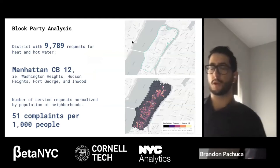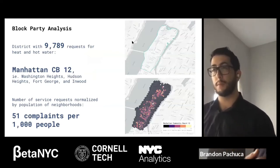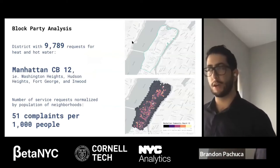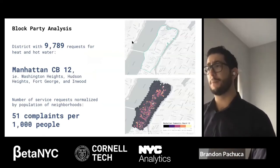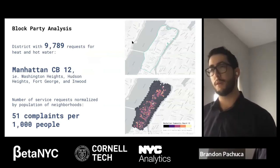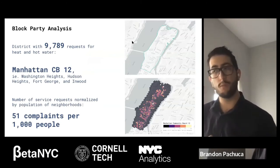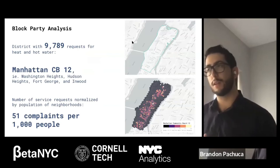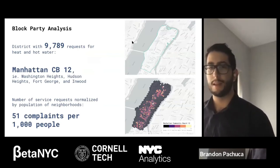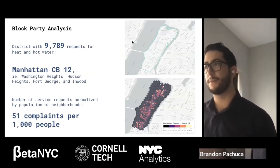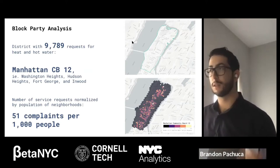311 service requests can either be short-term in nature, such as a noise complaint, or long-term, such as heat and hot water. Since community board meetings are typically focused on more chronic issues, we focused on a community board in Manhattan with a high number of service requests for heat and hot water. Manhattan Community Board 12, which includes Washington Heights, Hudson Heights, Fort George, and Inwood, had 9,789 311 points for heat and hot water — that's 50 points per 1,000 for the population in that community board.